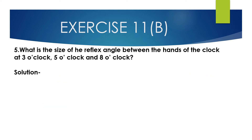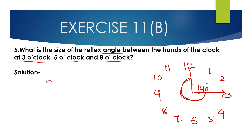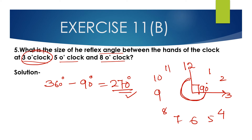Question number 5: What is the size of the reflex angle between the hands of the clock at 3 o'clock, 5 o'clock, and 8 o'clock? At 3 o'clock, the angle between the hands is 90 degrees. The reflex angle is 360 degrees minus 90 degrees, which equals 270 degrees. So the reflex angle between the hands of the clock at 3 o'clock is 270 degrees.